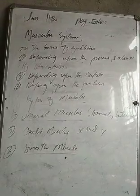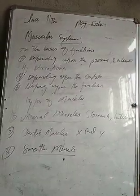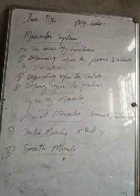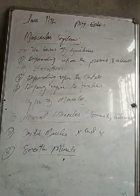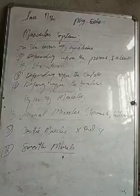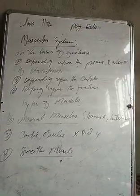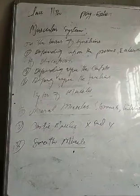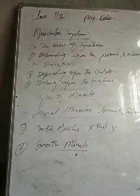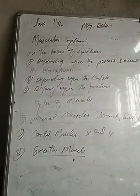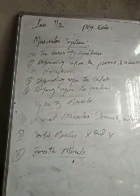Our muscles are used for different roles in daily life. We can walk, we can move, we can run, we can jump. Skeletal muscles help us in all these voluntary movements. We also have smooth muscles which perform their own functions.